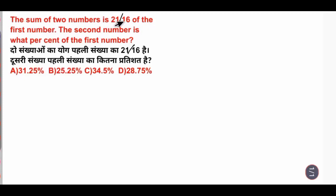The sum of two numbers is 21 by 16 of the first number. The second number is what percent of the first number?